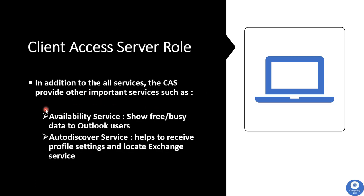In addition to all these services, the Client Access Server provides other important services such as the Availability Service, which shows the free/busy data of your Outlook users. For example, when scheduling a meeting in Outlook, you can check whether a room mailbox or a user is free or busy — this free/busy information is provided by the Availability Service. Next is the AutoDiscover Service, which helps receive profile settings and locate Exchange services, playing an important role when configuring your Outlook profile.